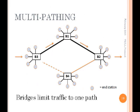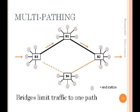Multipathing — a simple example. Here are some bridges. With Spanning Tree you get the loop broken and frames can only go one way, from B3 to B2 via B1. But if you use R-Bridges, RB3 can multipath — send some flows one way and some flows the other way, providing higher throughput. This is the sort of thing you would expect routers to do, but not what you would expect bridges to do.